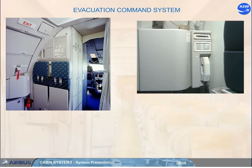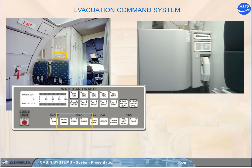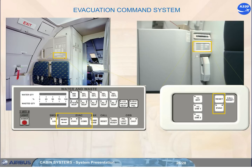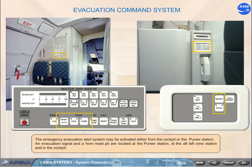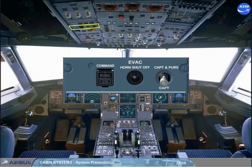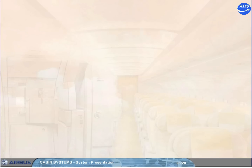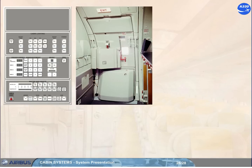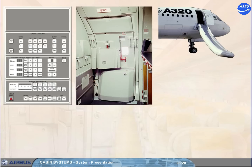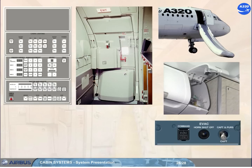The emergency evacuation alert system may be activated either from the cockpit or the purser station. An evacuation signal and a horn reset push button are located at the purser station, at the aft left crew station, and in the cockpit. On the evacuation panel in the cockpit, a switch allows the evacuation command to be activated from the purser station and the cockpit, or from the cockpit only. In this module, the controls and indications of the doors and exits, the slides, the emergency equipment, and the evacuation command system of the cabin have been presented.